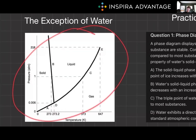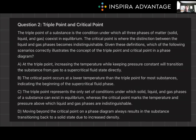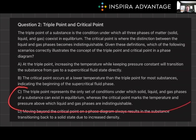Remember this nice diagram we looked at earlier. On to question two: the triple point of a substance is the condition under which all three phases of matter — solid, liquid, and gas — coexist in equilibrium. The critical point is where the distinction between the liquid and gas phases becomes indistinguishable. Given these definitions, which of the following scenarios correctly illustrates the concept of triple point and critical point in a phase diagram? The answer is C: the triple point represents the only set of conditions under which solid, liquid, and gas phases can exist in equilibrium, whereas the critical point marks the temperature and pressure above which liquid and gas phases are indistinguishable.